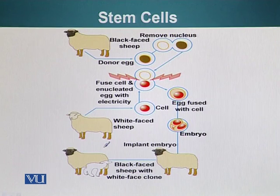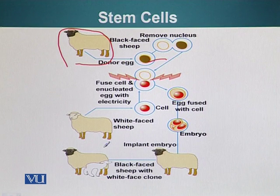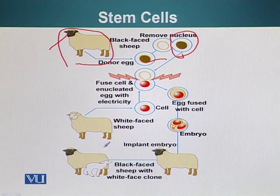So here we have two individuals. One is a black face sheep which is going to donate a fertilized egg. We will remove the nucleus from this fertilized egg so it will become an enucleated cell — an enucleated fertilized egg cell. We will take another cell from the body of an adult sheep. In this case, our donor has a black face. The somatic cell is taken, and the unfertilized egg will be fused with this somatic cell.